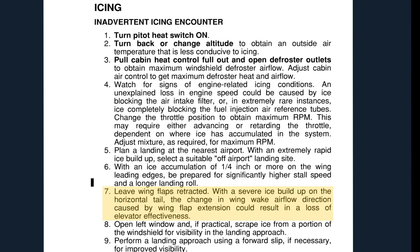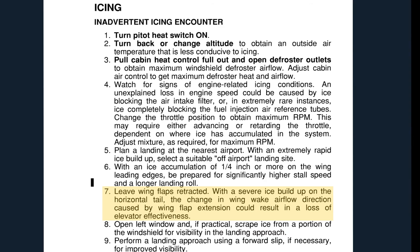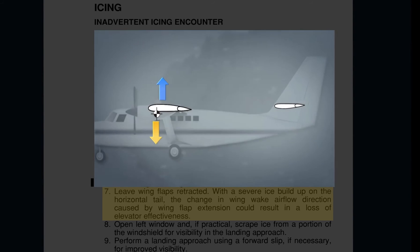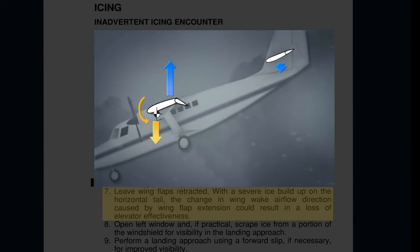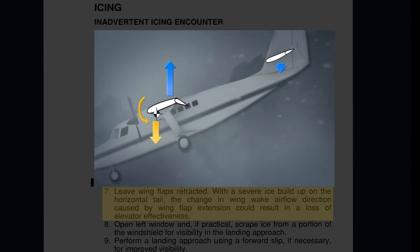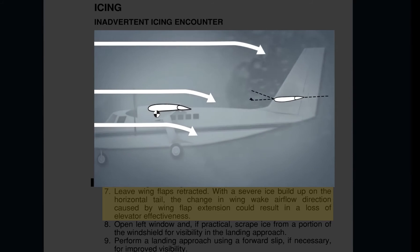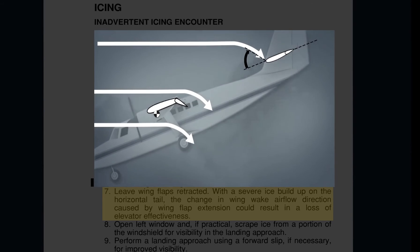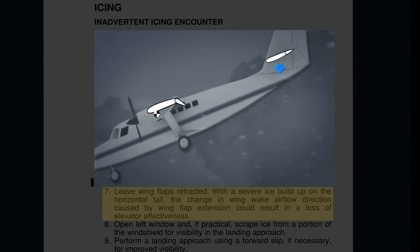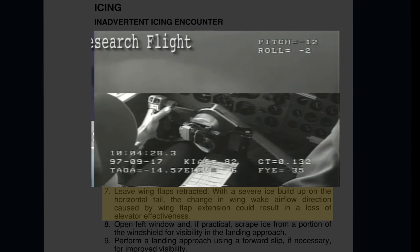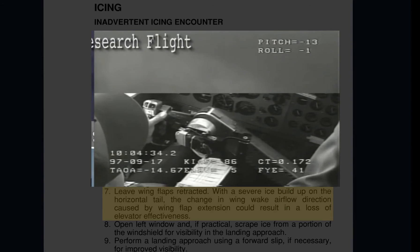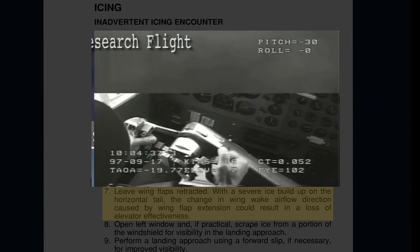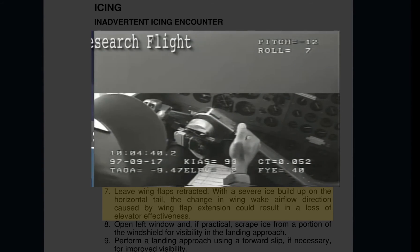Step 7 consists of leaving flaps retracted if we have ice building up in the tail. Changing the aerodynamic airflow by using flaps might leave you without elevator control and a potential tail stall. Remember that if you experience a dramatic drop of the airplane's nose, tail stall recovery is completely opposite from the procedures required to recover from a wing stall. You have to pull the yoke back, opposite to the action for a wing stall recovery. This will reduce the angle of attack of the tail plane and move it away from its critical angle of attack.